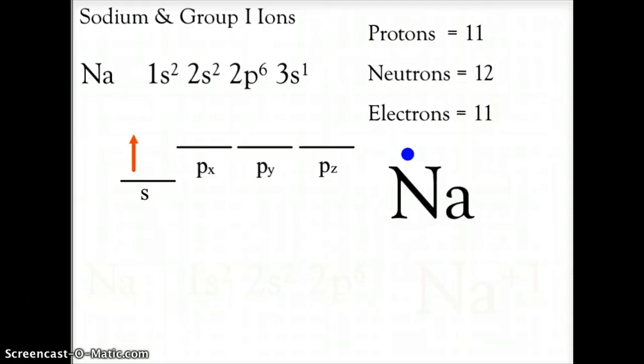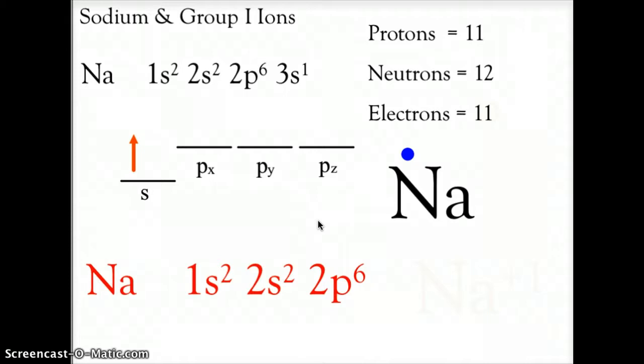That's what sodium will do. Sodium will actually drop that extra electron in the 3s¹, and it will go to 1s² 2s² 2p⁶. Now, this changes the electron count to 10. So now we have 11 protons, 10 electrons, which means it has one extra positive charge, making it a positive 1 ion.